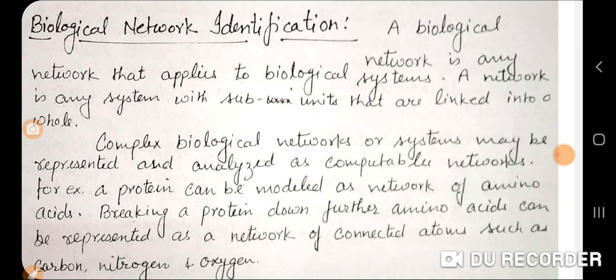What does a biological network comprise? It comprises genes, protein, functions, behavior, mechanism, pathways — so many things. Including all those things, a network could be designed.